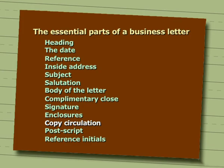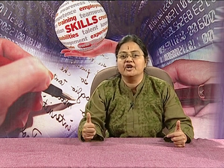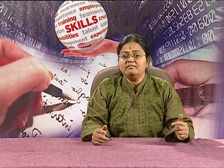It can be written as ENCLS and the number of documents, or ENCL and the type of document. Copy circulation or CC is written when copies of a letter are to be sent to people other than the actual receiver. Postscript or PS is written when the sender wishes to add something to the body of the letter. It is used to convey some important information in a line. It is necessary that the sender signs the PS as well. Reference initials — it is customary to type the initials of the person who dictated the letter followed by the initials of the person who typed the letter, at the end of the letter close to the left margin.